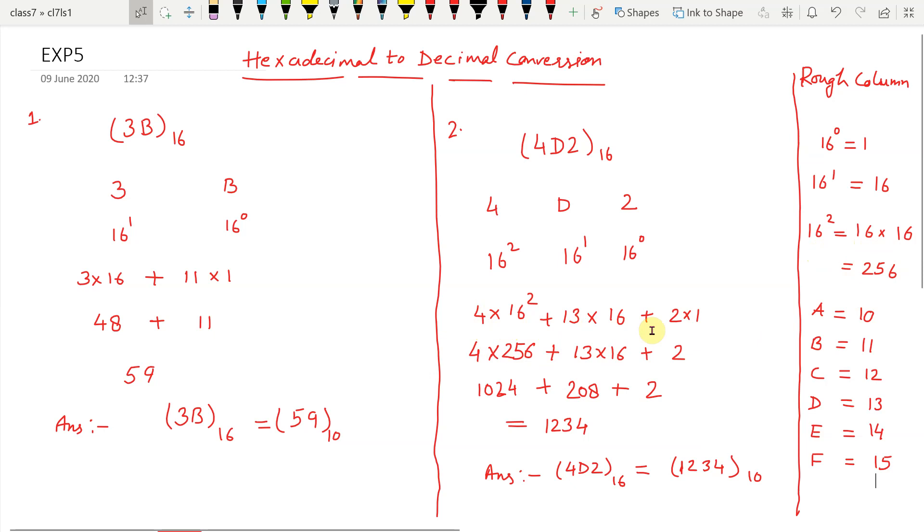So, multiply each hexadecimal number with its positional value. Simplify it and then after this multiplication, you will find the sum of all the products and the result will be 1,234.